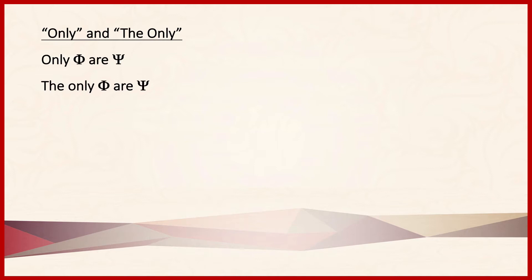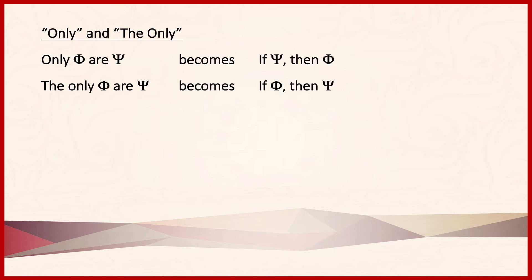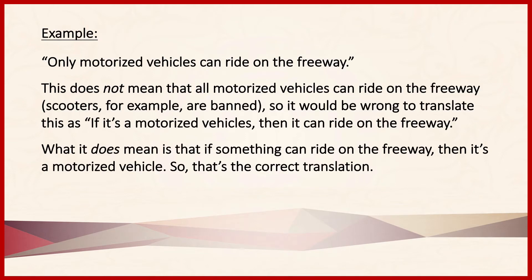Next we have 'only' and 'the only.' Remember that whatever immediately follows 'only if' goes in a hypothetical proposition's consequent. The same applies if we have the word 'only' by itself: 'only phi are psi' becomes 'if psi, then phi.' For example, 'only motorized vehicles can ride on the freeway' does not mean all motorized vehicles can — scooters might be banned. So it would be wrong to translate it as 'if it's a motorized vehicle, then it can ride on the freeway.' The correct translation is 'if something can ride on the freeway, then it's a motorized vehicle' — whatever immediately follows 'only' goes in the consequent.